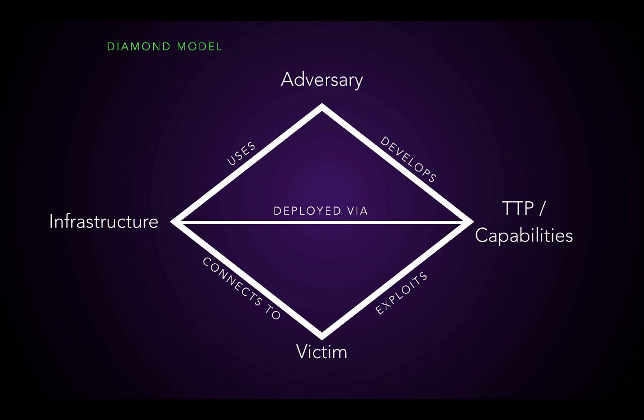If we follow some of these lines, we can see the adversary develops certain capabilities, and then that gets deployed through certain infrastructure. Infrastructure could be a network port, a USB stick, or email. And then that connects to the victim, which then gets executed or whatever.